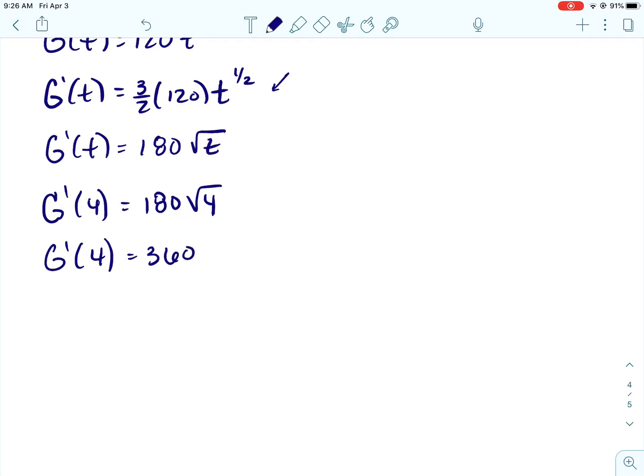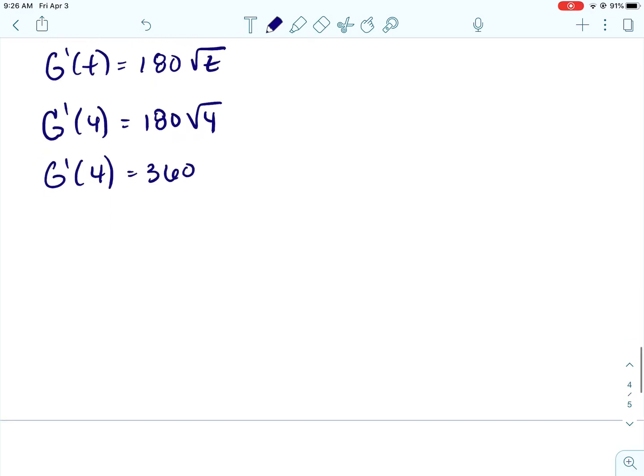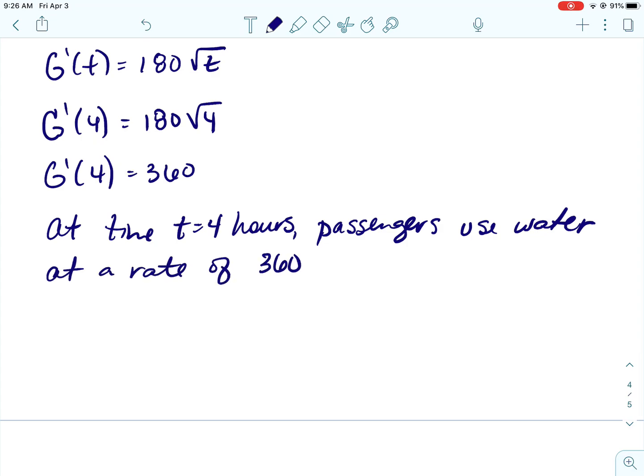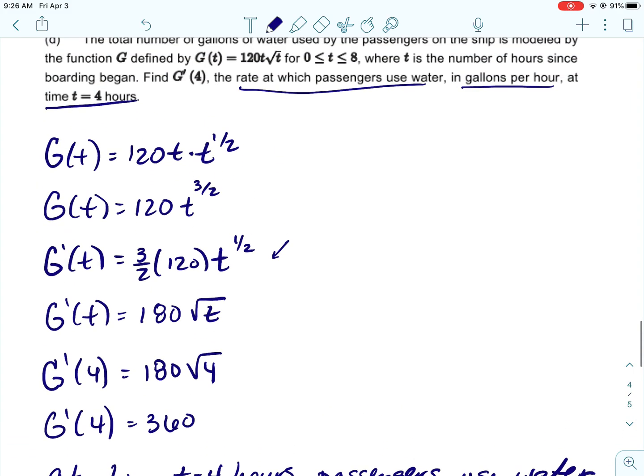Alright. And then g prime of 4. We are going to just put 4 in. So that's 180 times 2, which is 360. Alright. And let's just go ahead and write down what that means. At time t equals 4 hours, passengers use water at a rate of 360 gallons per hour.